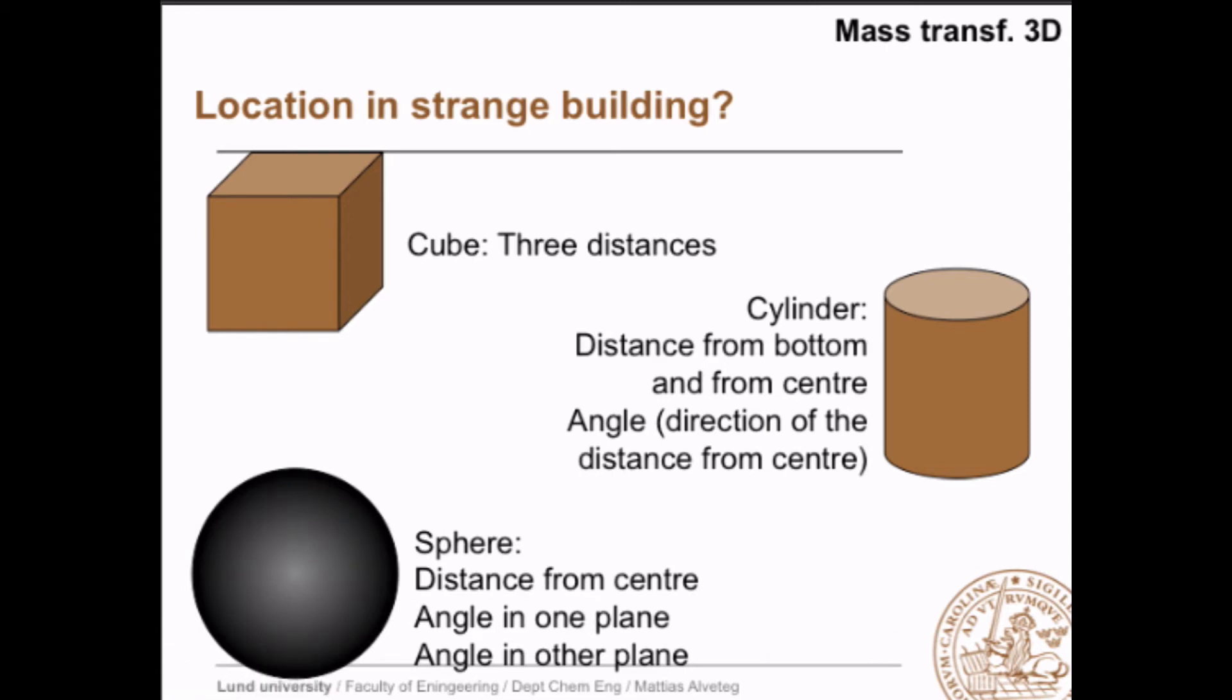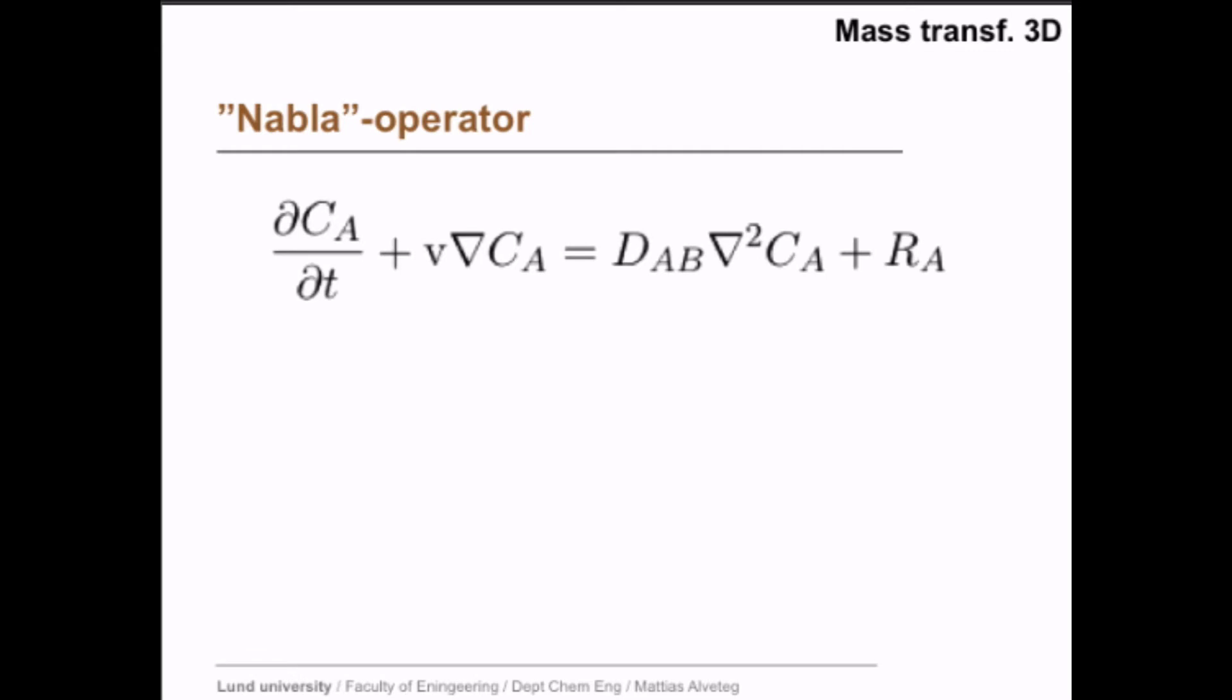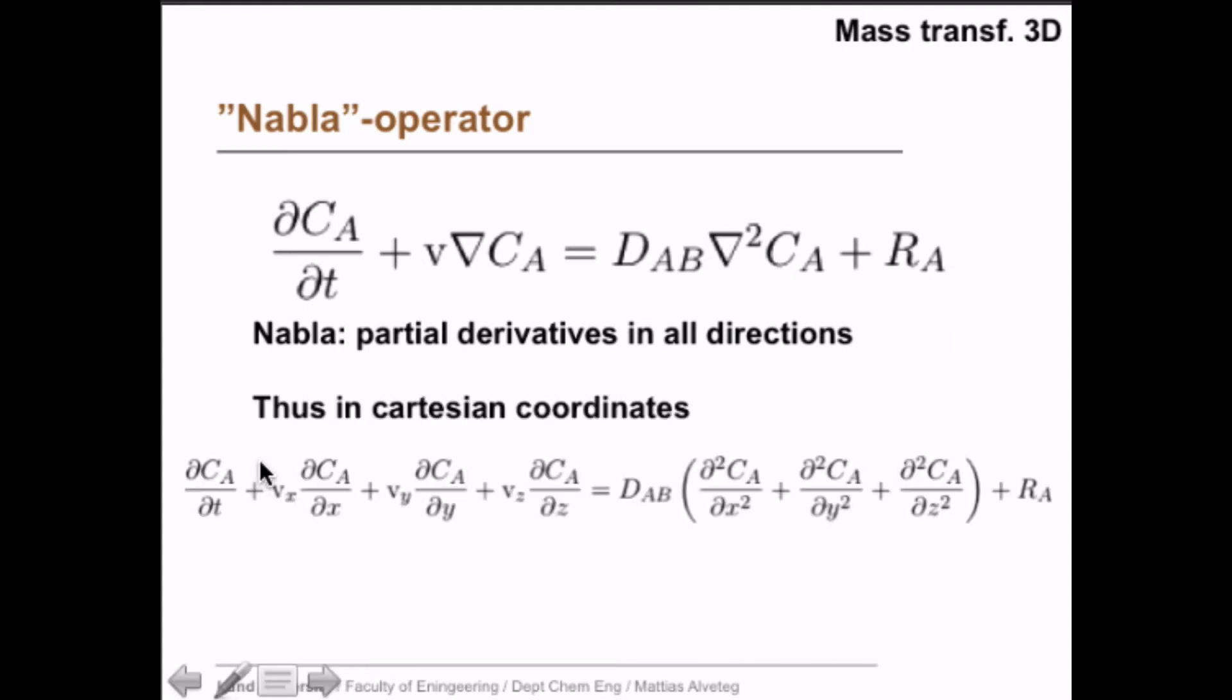So when we wrote the equation for mass transfer in three dimensions, we used Cartesian coordinates. A more general way to write it is to use the Nabla operator. And that's simply taking the partial derivatives in all directions. So Nabla CA is the derivative of concentration in all directions: ∂CA/∂x, ∂CA/∂y, and ∂CA/∂z. While Nabla squared is the second order derivative in all directions. So simply in Cartesian coordinates, we have, once again, what we had before. So ∂CA/∂t plus vx times ∂CA/∂x plus vy times ∂CA/∂y plus vz times ∂CA/∂z. And on this side, we have the second order derivative. Okay, you may note here that you have vx, vy, and vz, because we have different velocities in different directions. While diffusivity, we have here assumed that we have the same diffusivity in all directions.